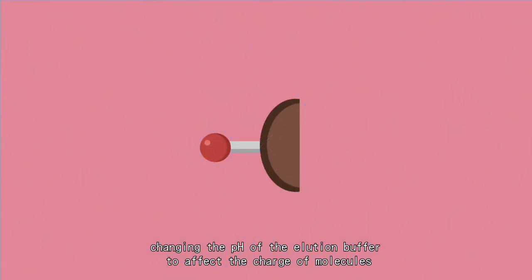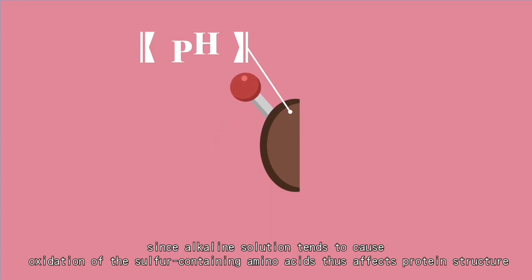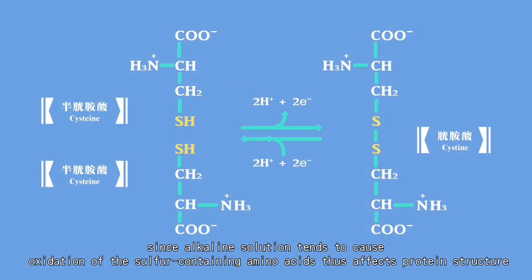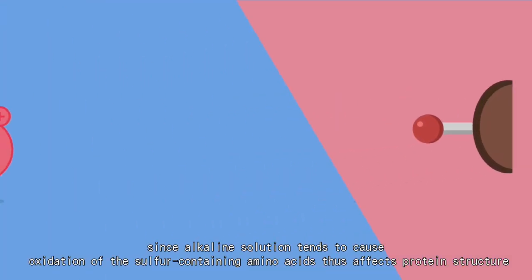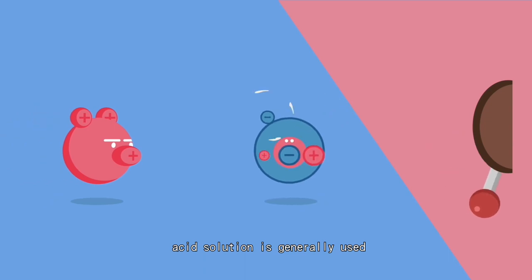Change the pH of the elution buffer to affect the charge of molecules. Since alkaline solution tends to cause oxidation of the sulfur-containing amino acids, thus affects protein structure, acidic solution is generally used. The eluted protein solution is adjusted back to neutral pH immediately upon completion of elution.